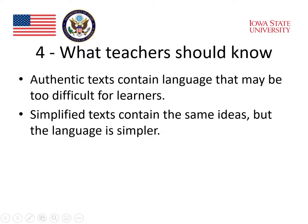Authentic texts contain language that may be too difficult for learners — that's the language that was used by the original author of the text, intended for very proficient speakers of English. Simplified texts, in contrast, contain the same basic ideas, but the language is simpler. Such texts are often created for learners so that they can have access to the same meaning without having to understand the difficult texts.